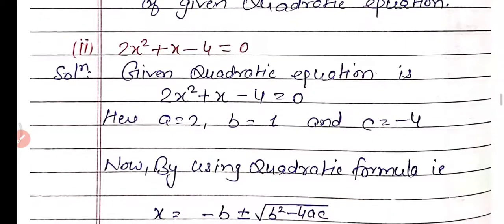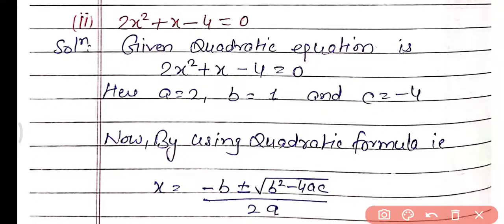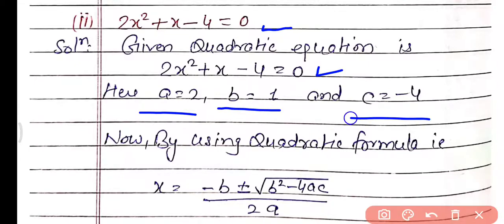You can pause the video and note it down. Now proceed for part number 2. The given quadratic equation is 2x² + x − 4 = 0. The coefficient of x² is a = 2, the coefficient of x is b = 1, and the constant term is c = −4. By using the quadratic formula x = (−b ± √(b² − 4ac)) / 2a.